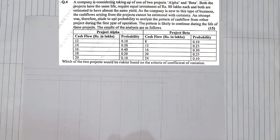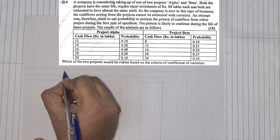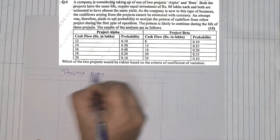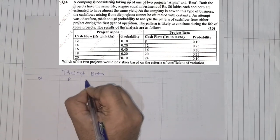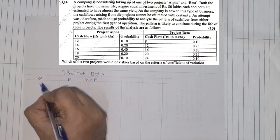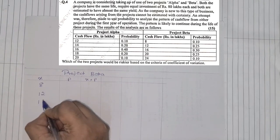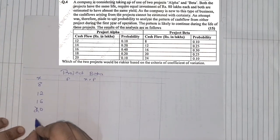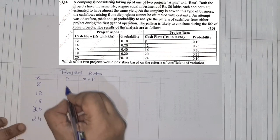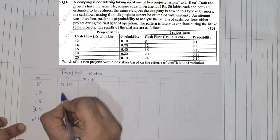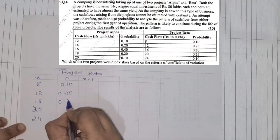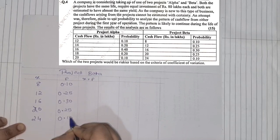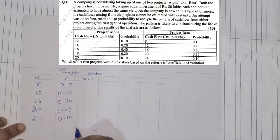So we'll go with the second part, project Beta, in the same order. So I'll write here, this is project Beta. We have X, we have P, next will be X into P. So X may 8, 12, 16, 20, and 24. From probability we have 0.10, 0.25, 0.30, 0.25, and 0.10.